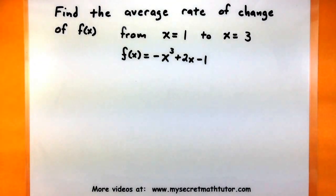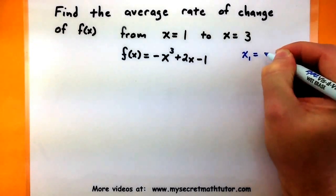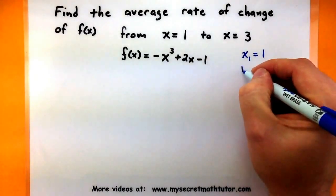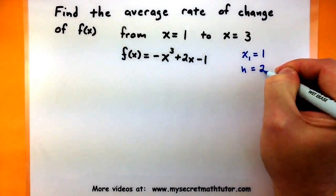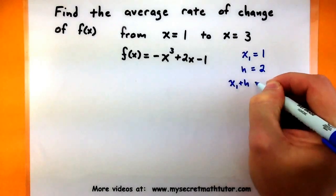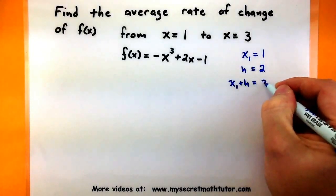Remember that in order to do this, we have to look at our first point, x = 1, and then how far away it is so we can do the difference quotient. I'm going to say that x₁ is at 1. The distance between these two points, h, is 2. So when I need x₁ + h in my difference quotient, I'll add these two values together and use 3.